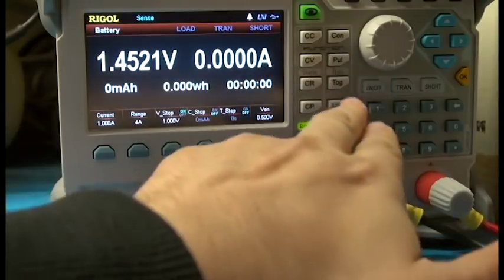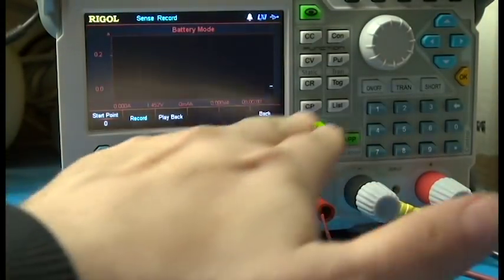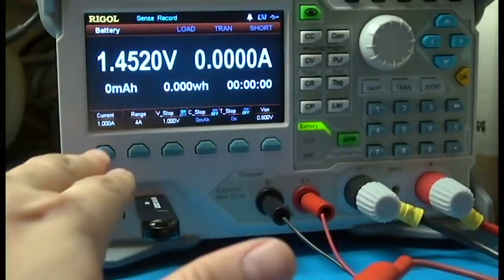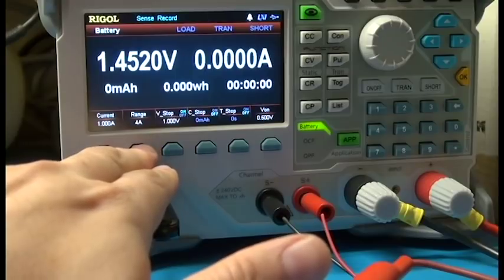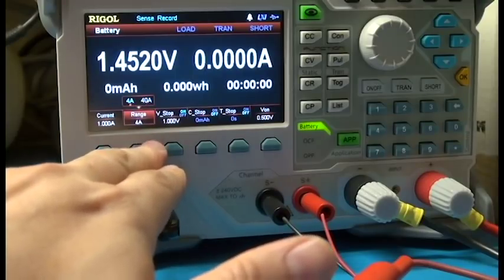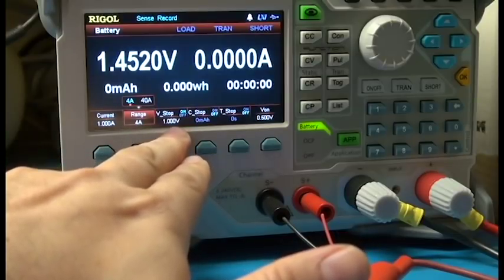I'm going to try to record this. So I'm going to set one amp constant current. Four amp range will stay there, and I want to stop it at a cutoff of one volt.